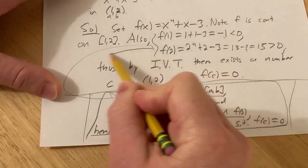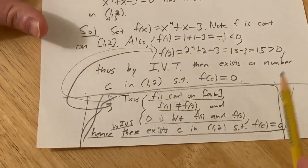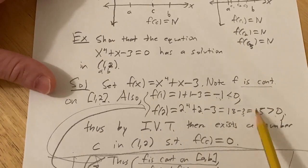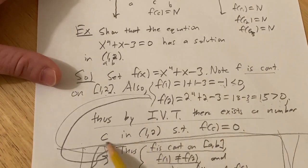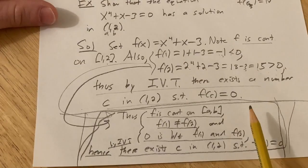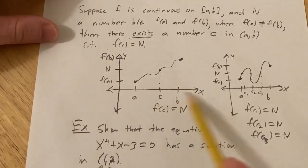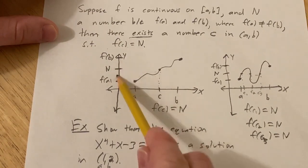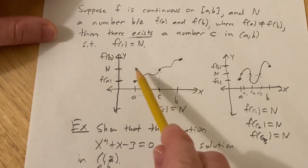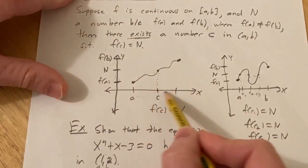So if you want to be careful with your solution, after computing f(1) and f(2), you go back and reiterate the three conditions. Most people just state the conclusion and it's understood. The main idea behind the IVT is that a continuous function on a closed interval takes on every intermediate value — for any y value you pick between f(a) and f(b), you can find a c such that f(c) equals that value. Good luck.